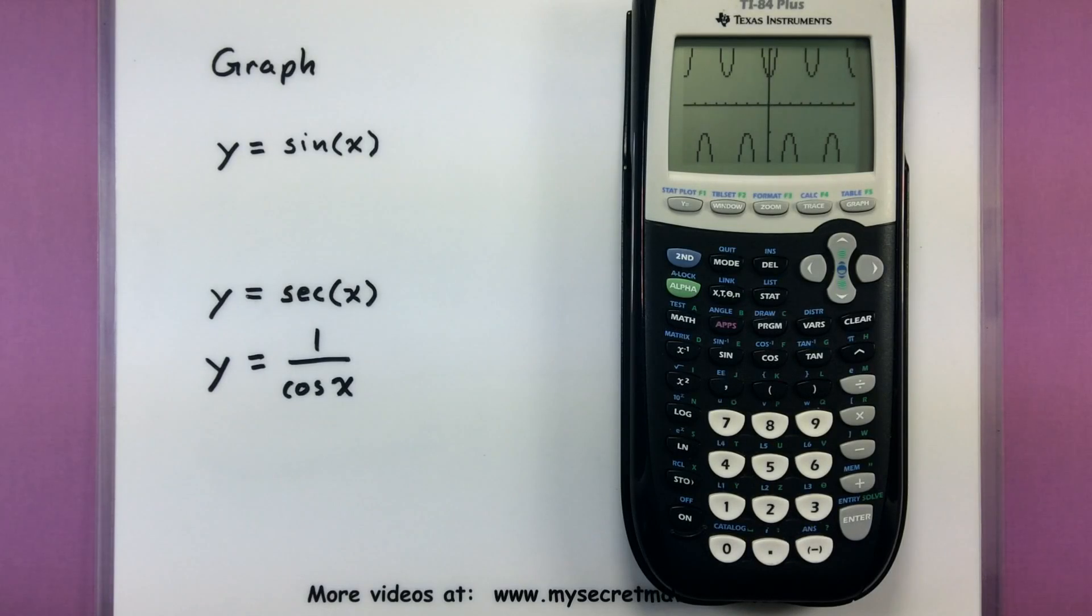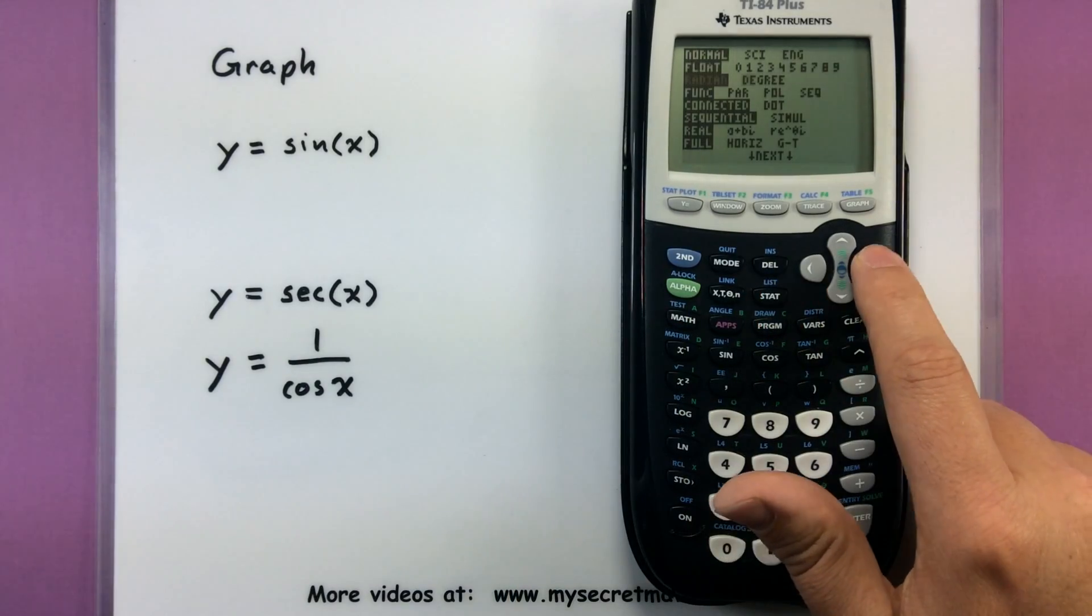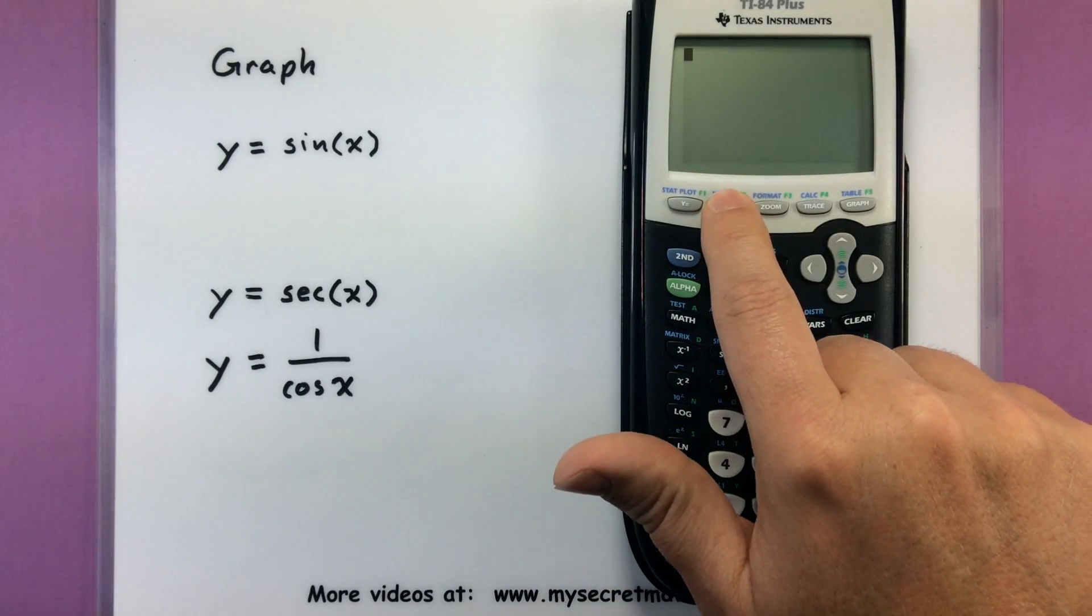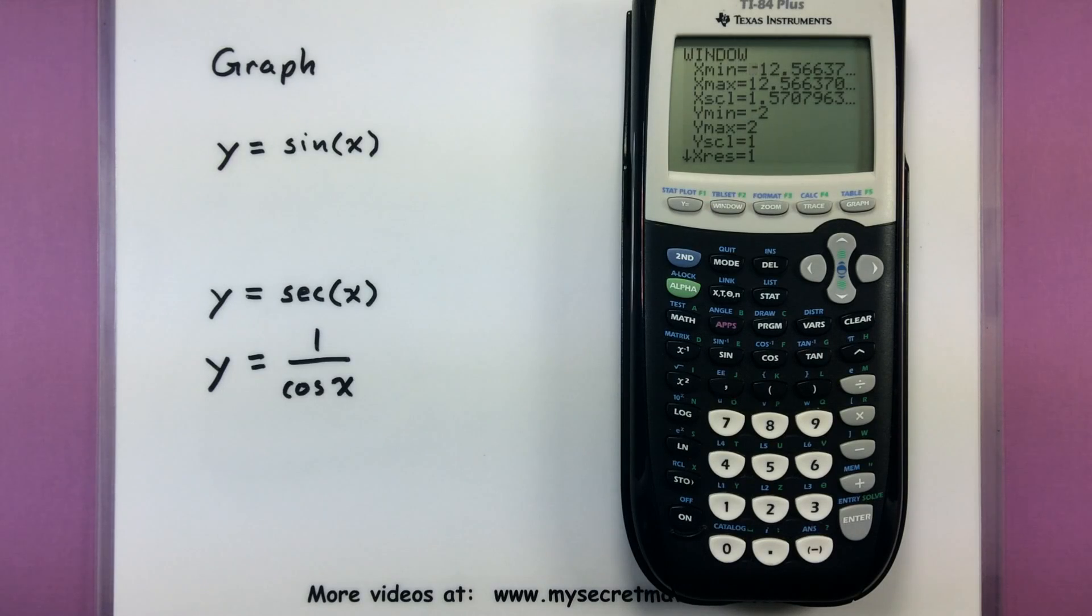So you've seen a couple of examples using radians. Let's do this as if I was in degree mode and see what changes I'd need to make. So the first thing, let's go into our mode and switch this over to degrees. Now we need to adjust our window. Since we're working with degrees and I still want to see a few different periods of the function, I'm going to go from negative 720 all the way up to 720. For the scale, every tick mark will equal 90 degrees.